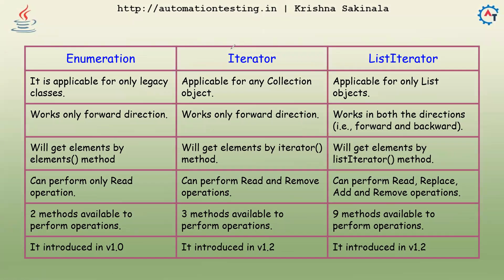All three are cursors in Java. Enumeration is applicable for only legacy classes, Iterator is applicable for any collection object, and ListIterator is only for list objects. So Enumeration is for legacy classes, Iterator is for any collection, and ListIterator is for only list objects.